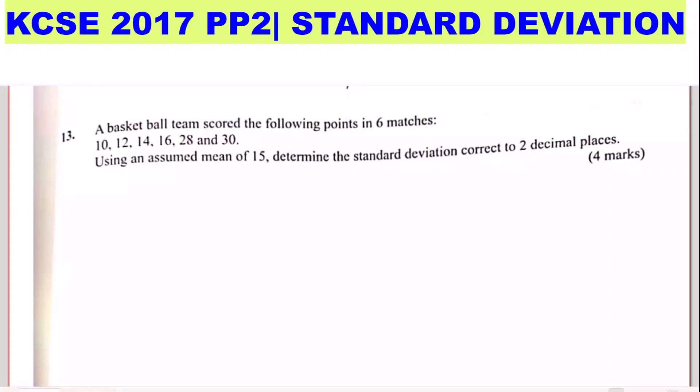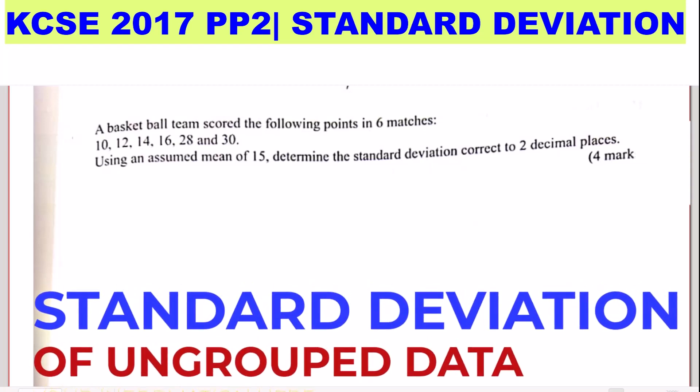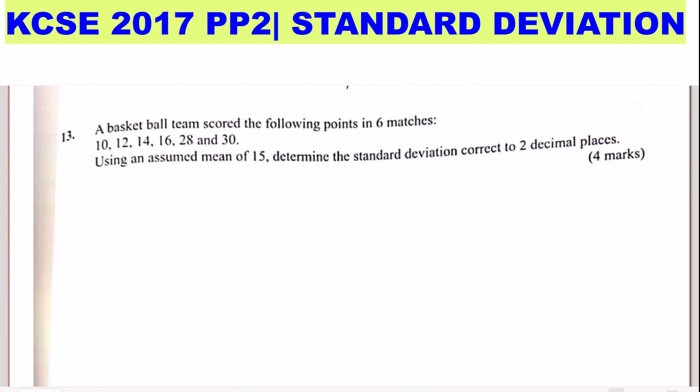How to determine the standard deviation of ungrouped data? A basketball team scored the following points in six matches: 10, 12, 14, 16, 28, and 30. Using an assumed mean of 15, determine the standard deviation correct to two decimal places.